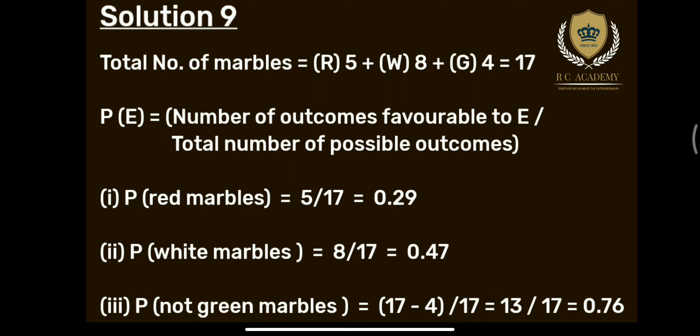Third: इसमें थोड़ा फर्क है — ध्यान से देखिए। P(green marbles) नहीं लिखना है, हमको लिखना है P(not green marbles)। Green नहीं है — बाकी जो आ सकता है वो red और white है। तो number of outcomes favorable to E = 17 − 4 = 13 upon 17. Then answer आएगा 13/17 ≈ 0.76. Got it!